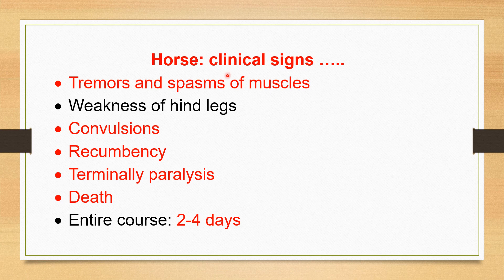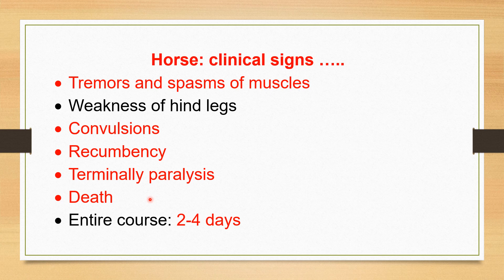Continuation of signs in horse: there are tremors and spasms of certain muscles which the clinician can see from a distance, and weakness of the hind legs. Then convulsions start, the animal goes into recumbency, then terminal paralysis and death occur. The entire clinical course in the horse is very short — 2 to 4 days.